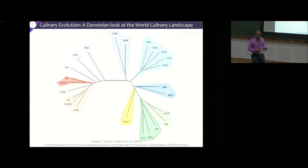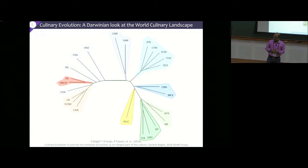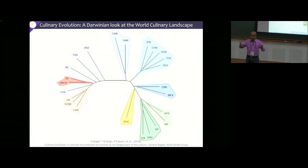A very exciting question I've been dealing with for the last year—with some preliminary results—is whether, by the paradigm of cultural evolution, we can look at food and cuisines from a Darwinian perspective: how have they evolved, moved from generation to generation, and diversified like other cultural entities such as languages, thereby leading to a tree of world culinary heritage? This is a preliminary but beautiful tree that we are building.